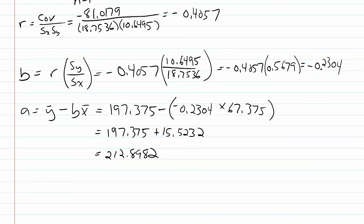If you wanted to predict the score using a value of x, we need to plug these values back into our prediction equation. The prediction equation is going to be y prime equals 212.8982 minus 0.2304 times the value of x.